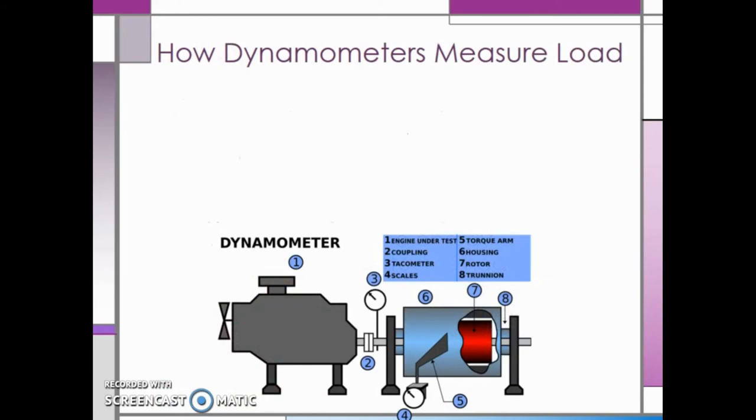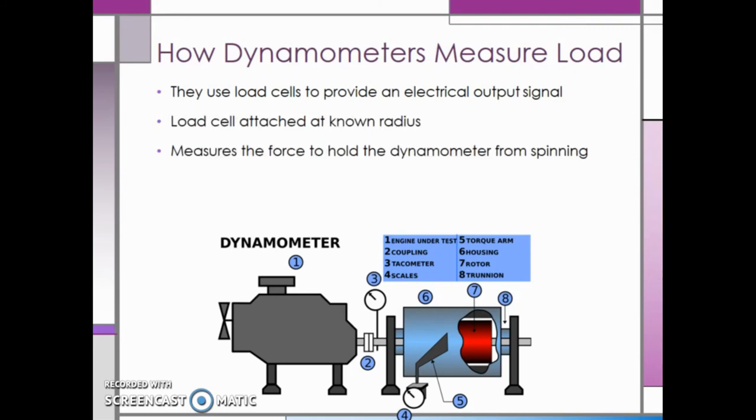Now we are going to take a look at how dynamometers measure load. They use load cells to provide an electrical output signal. A load cell is simply a transducer that converts force into measurable electrical output. This load cell is attached at a known radius, and it measures the amount of force required to hold the dynamometer from spinning.